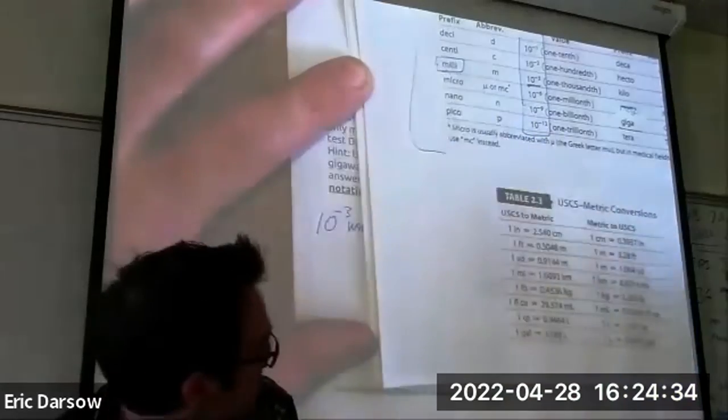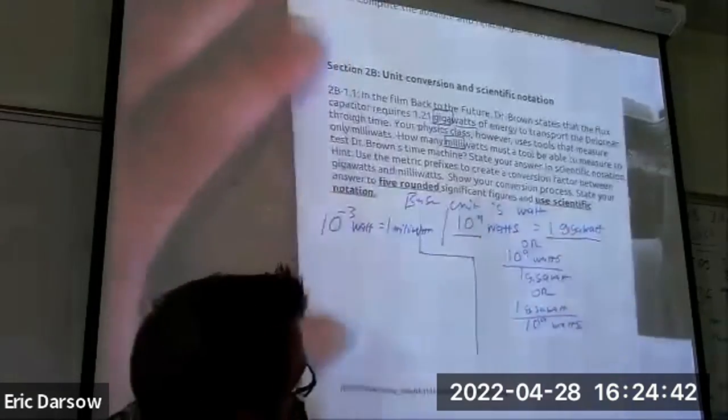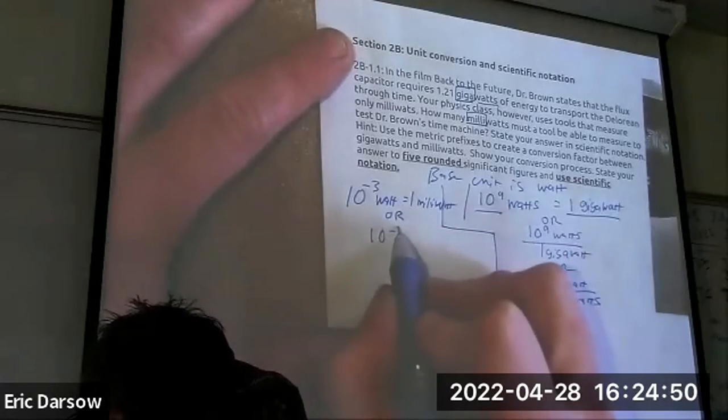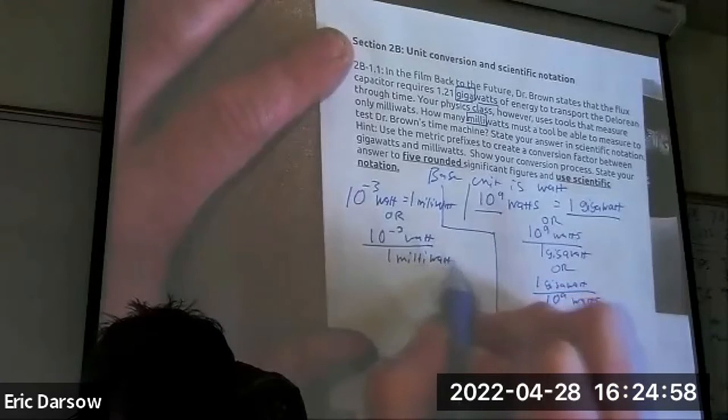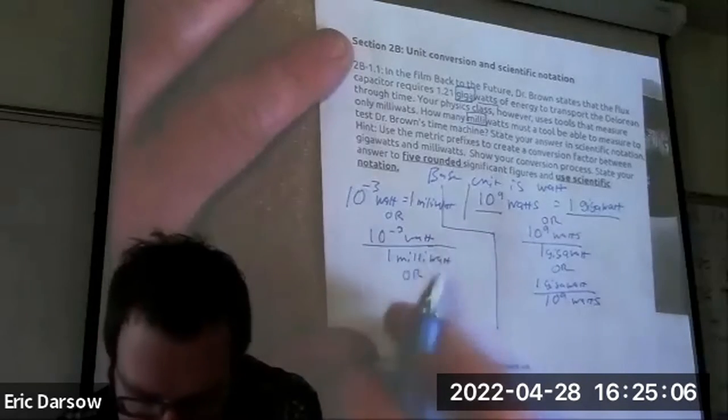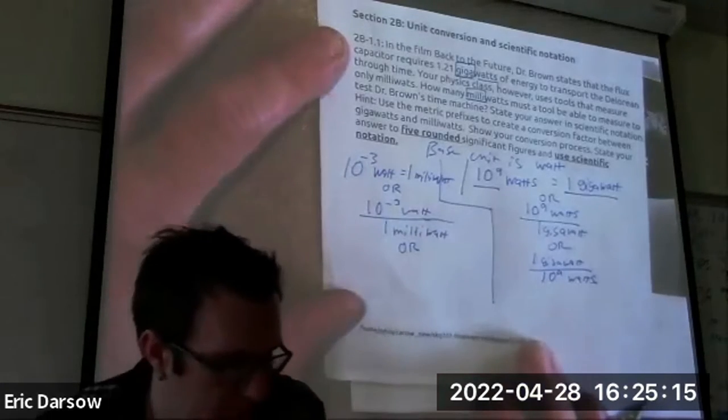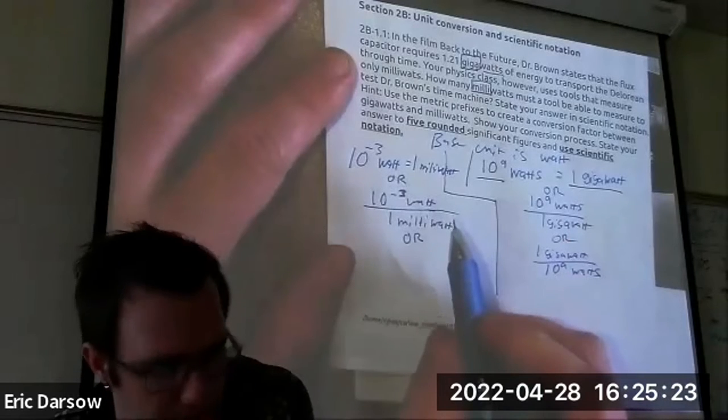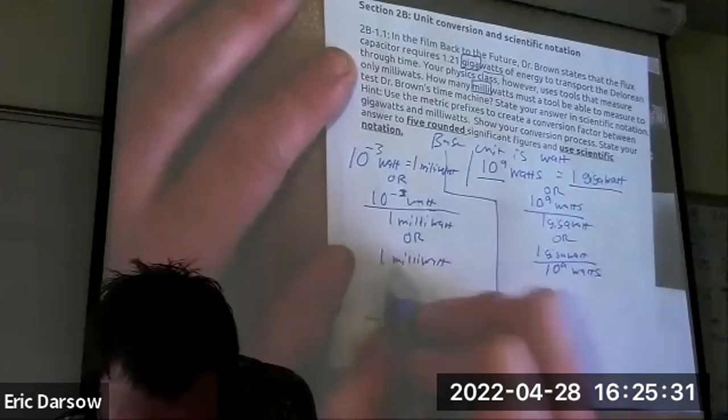What equals what? Jalen, you're an old pro. 10 to the negative third watts equals what? One milliwatt. Yes, 10 to the negative third watt - this is how many of your base unit equals one of your prefix units. Then we can also write this fractionally as 10 to the negative third watt over one milliwatt, or one milliwatt over 10 to the negative third watt.